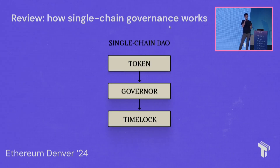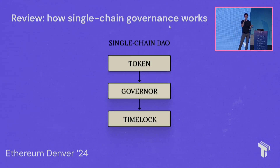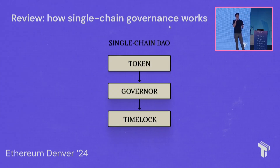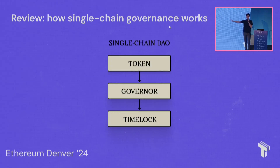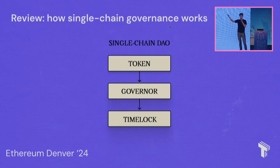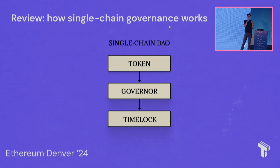The scalability roadmap — the rollup-centric ETH roadmap — has only just started playing out over the past year or two. Once we have multiple chains, we need bridges and ways to move state and value between chains, and only then can you start building applications like a DAO on top of the interoperability stack. Before we had many chains, most apps were just on one chain, and that was also true of DAOs.